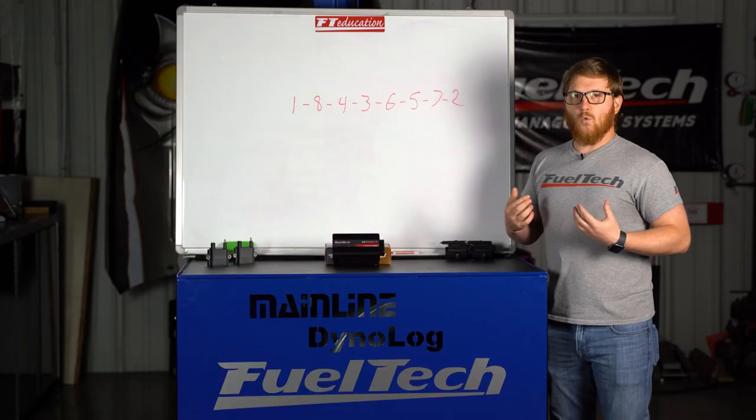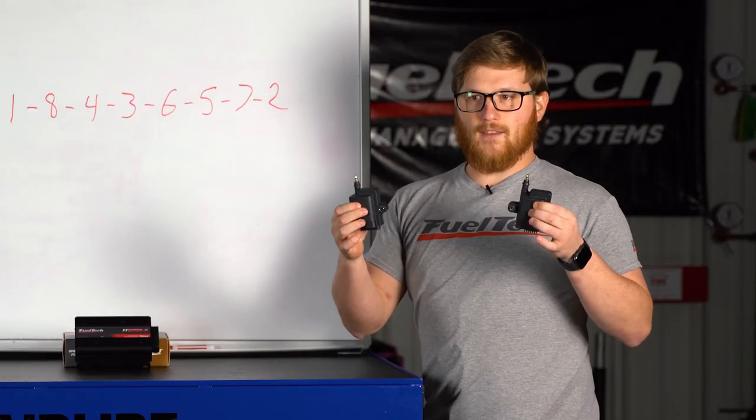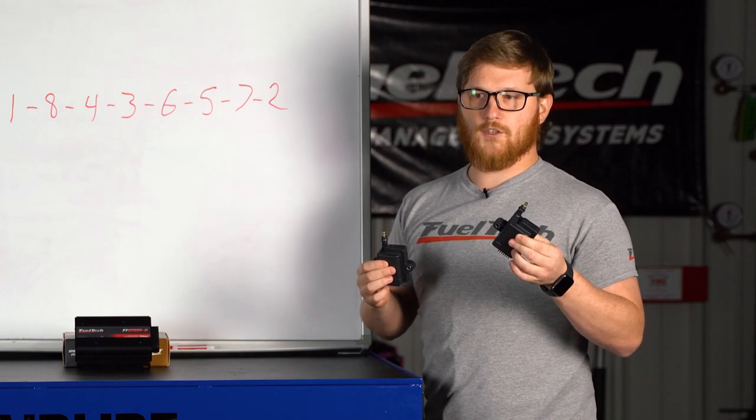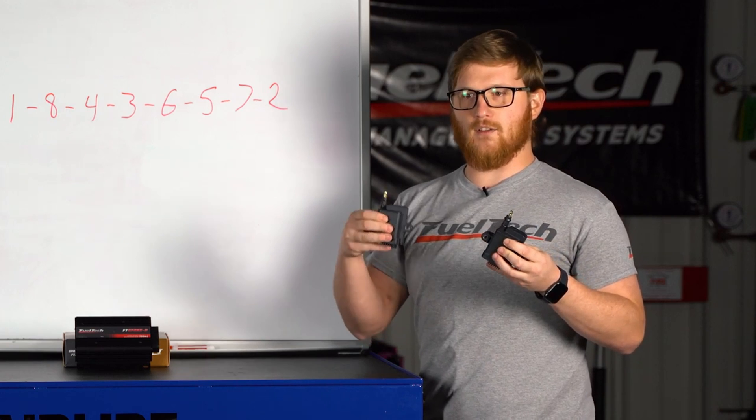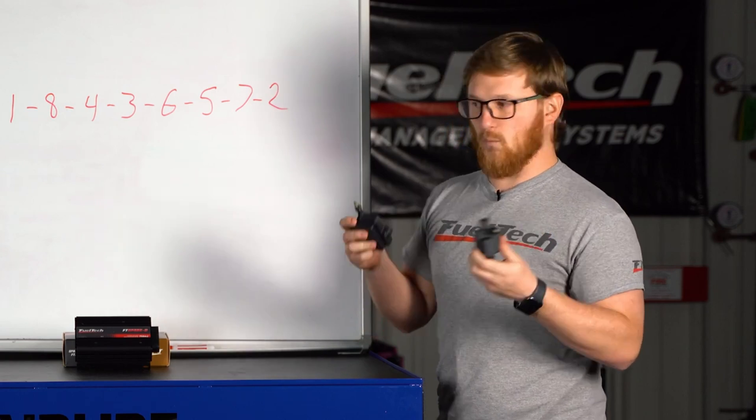Next we have wasted spark and wasted spark is going to take two coils and fire them at the same time. One of them will be firing when it should be firing to light off the mixture. The other one will be firing on the exhaust stroke and that spark is what we call wasted. That's why it's called wasted spark.